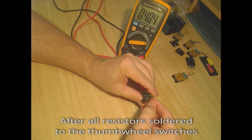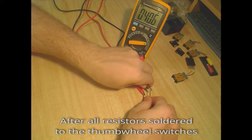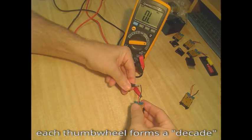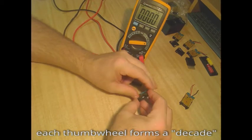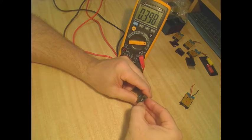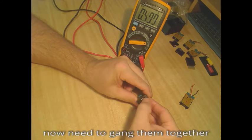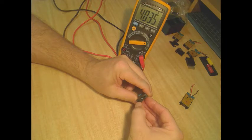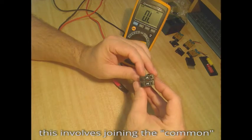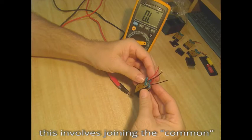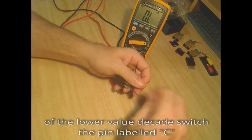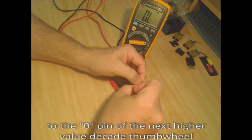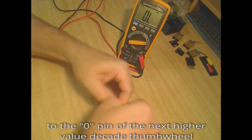Now with all the resistors soldered to the various thumb wheel switches finished, with each thumb wheel forming an individual decade of the overall resistance box, 5 in my case, now comes the part of ganging them together to form a completed project. This simply involves joining the common of the lower value thumb wheel decade, the pin labelled C, to the zero pin of the next higher value decade thumb wheel.